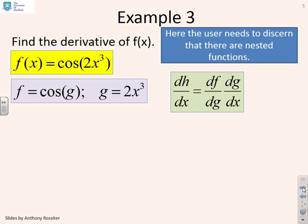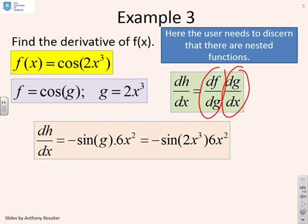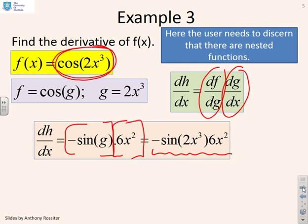So now dh/dx is going to be df/dg times dg/dx. I can write this down by inspection in this case. df/dg is minus sin g, and dg/dx is 6x squared. So my final formula is minus sin of 2x cubed times 6x squared. The key point here is with this original expression, I'm not told this is a function of a function. I have to work this out for myself and decide what I want to call f and what I want to call g.